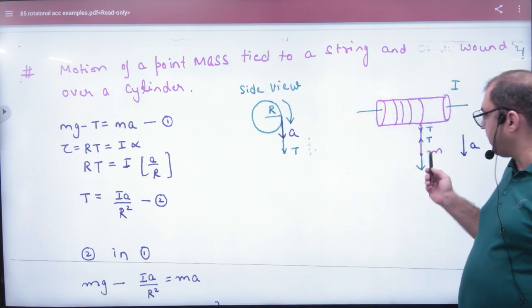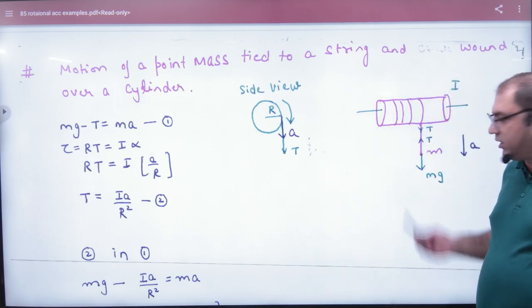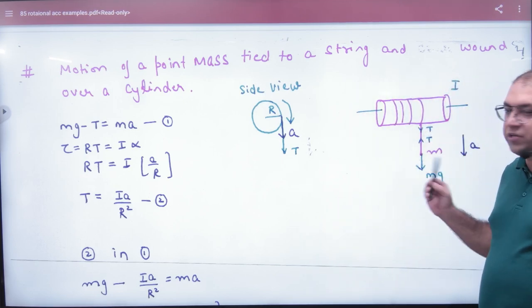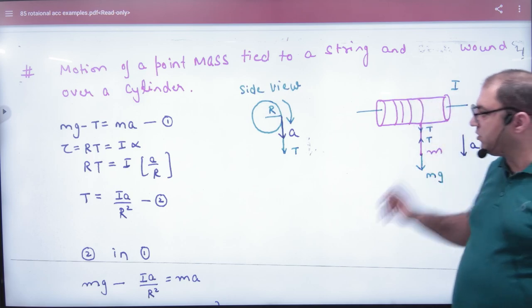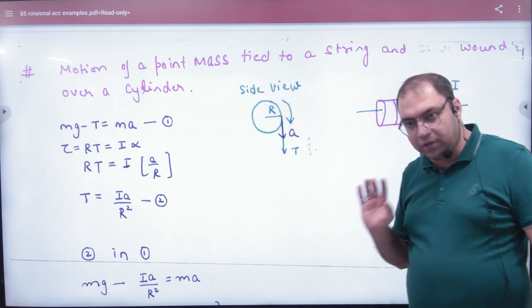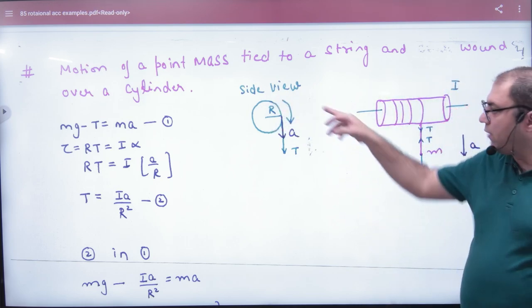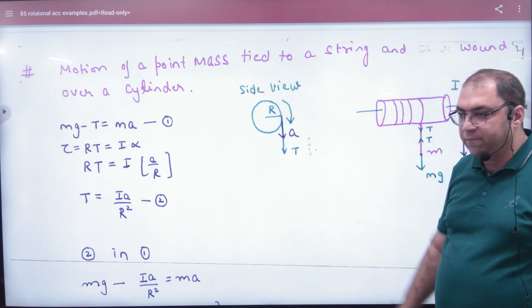So you have to tell what the acceleration of this mass. This mass is under here, what will be tension T. If you see the side view, it will show you the circle. So you will see that the tension of the mass is T, and it generates torque.